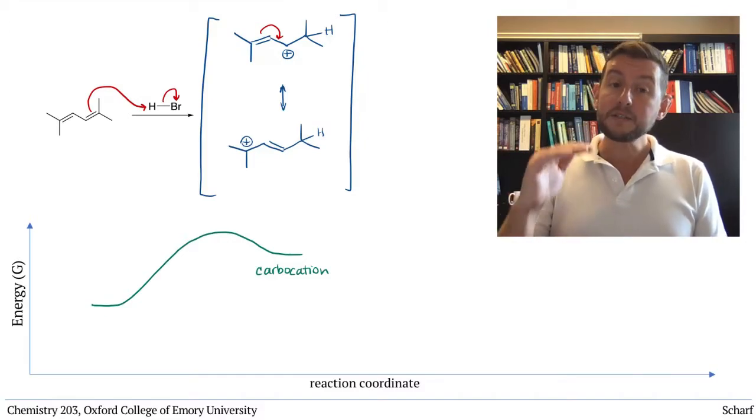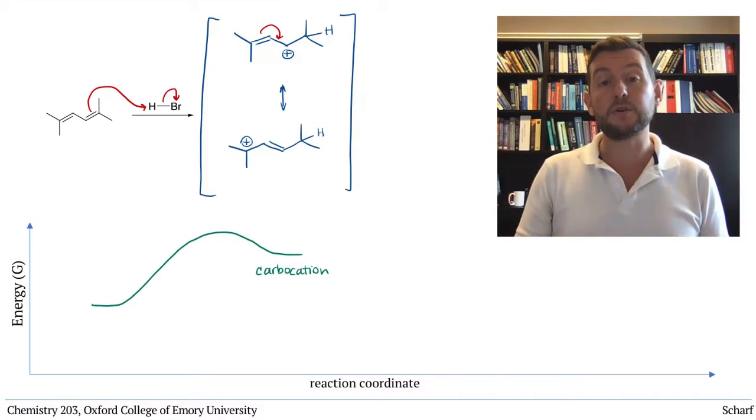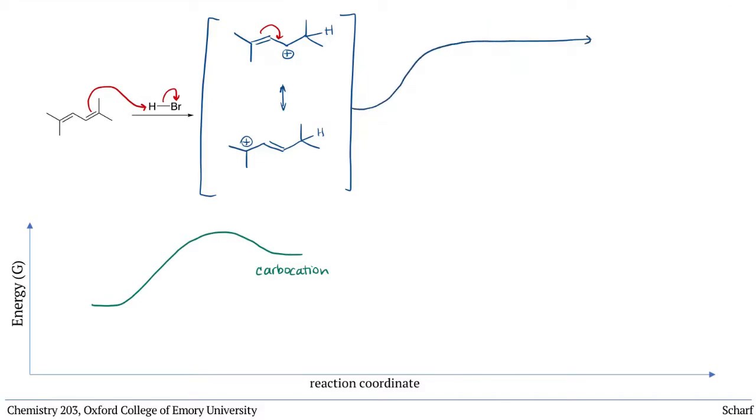But the positive charge is spread out over two different carbons, and the bromide can add to two different locations, giving these two possible products. These are, in fact, two different compounds and have different energies. The one with the tri-substituted double bond is more stable than the one with the di-substituted double bond.